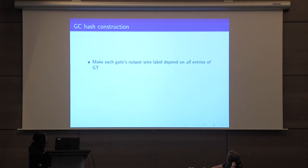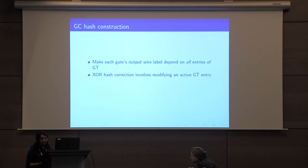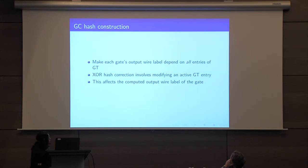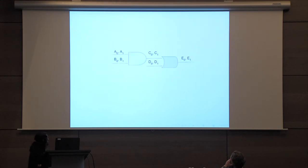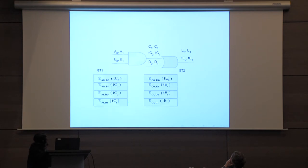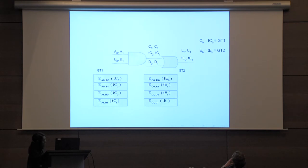Our refinement is to make each gate's output wire label depend on all entries of the garbled table. The intuition is that an XOR hash correction will now necessarily involve modifying an active garbled table entry, thus affecting the computed output wire label of the gate. We treat the output wire labels as temporary wire labels, and we set the real wire labels to be the temporary labels XORed with all the rows of the corresponding garbled table. We again set the hash to be the XOR of all the rows.